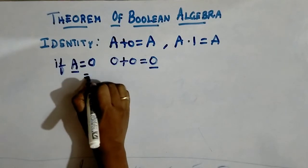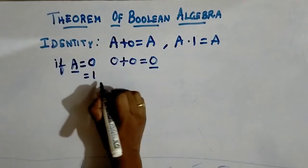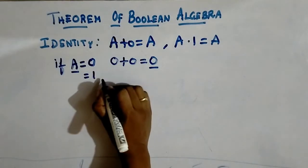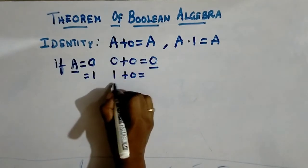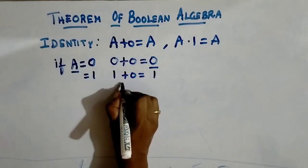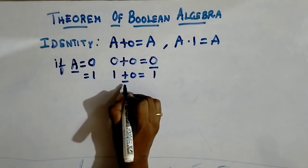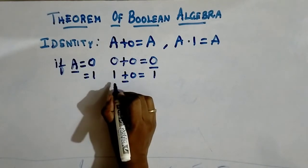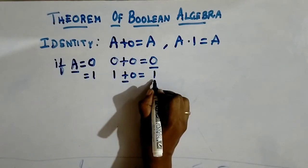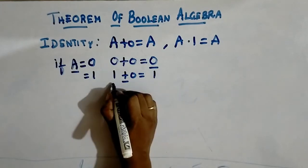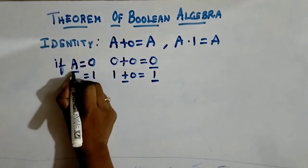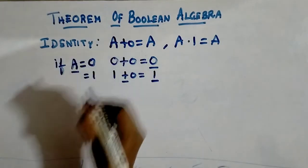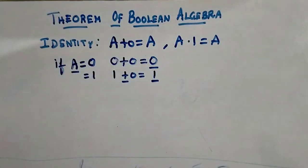In the other case, when you substitute a value as 1, substitute a as 1. So 1 plus 0 — what is 1 plus 0? It is 1. The plus means the OR operator. What is the property of the OR operator? If any one of your inputs is 1, you will get your output as 1. So 1 plus 0 is 1, which is nothing but a. So a plus 0 equals a.